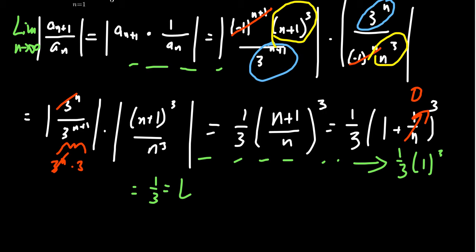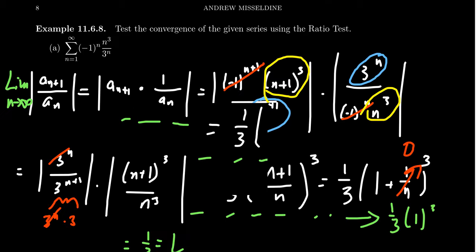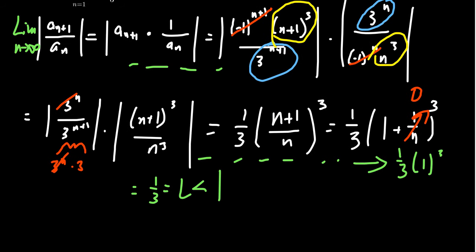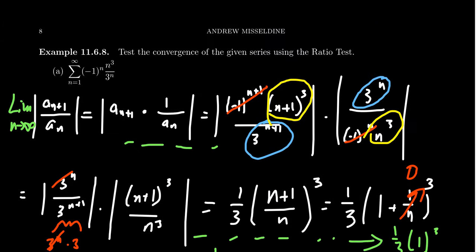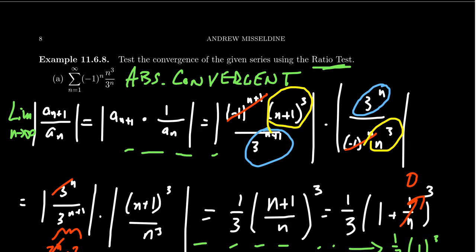Because this limit L = 1/3 is less than one, by the ratio test we conclude that the series is absolutely convergent. And since it's absolutely convergent, that implies it's convergent as well. So if asked whether the series converges, the answer is yes — it's absolutely convergent by the ratio test.